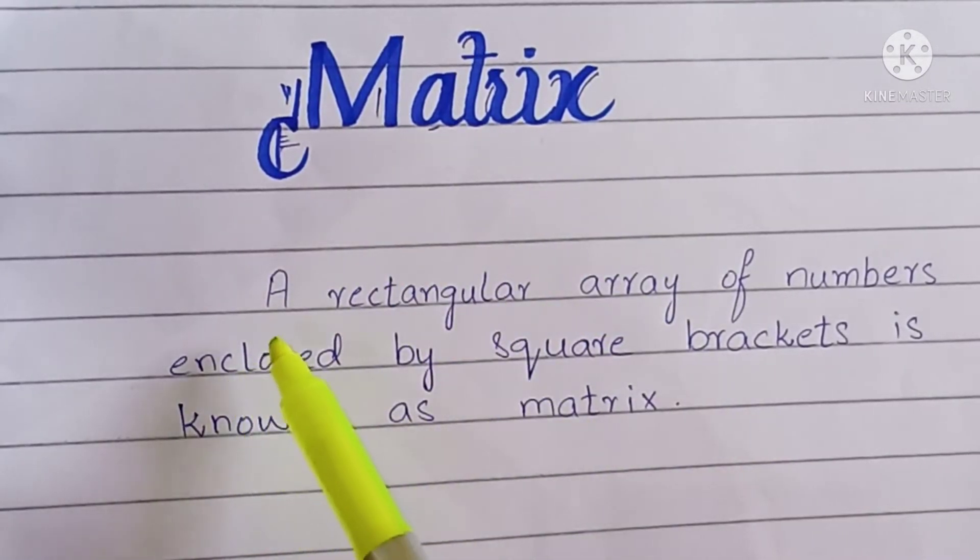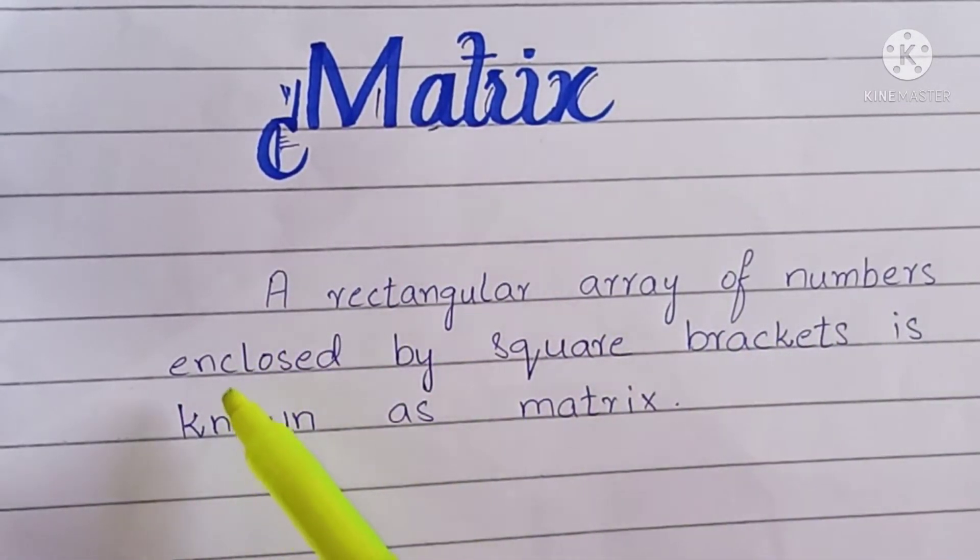What is matrix? A rectangular array of numbers enclosed by square brackets is known as matrix.